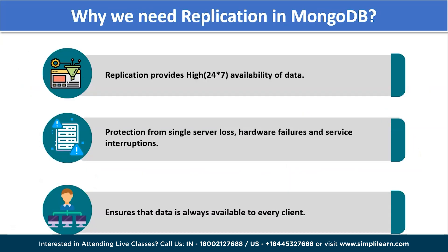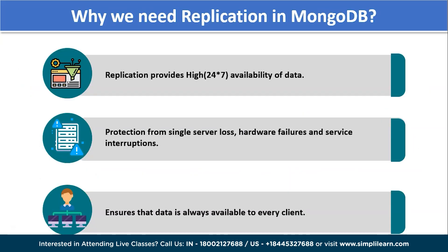Now, why do we need replication in MongoDB? The first reason is that replication provides high availability of data. The main purpose is to provide high availability and data redundancy by storing data on multiple servers rather than one. This data is available 24/7 to the user even if there are server-side issues or database failures. It also protects against single server loss, hardware failures, and service interruptions, ensuring not only high availability but also ease of access in the event of unexpected errors such as system crashes or hardware/software-based errors.